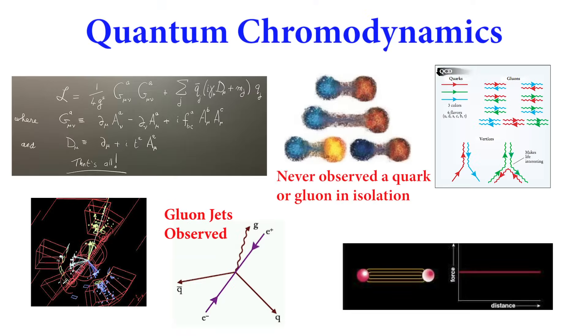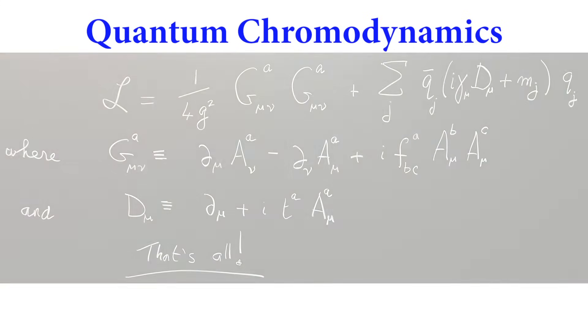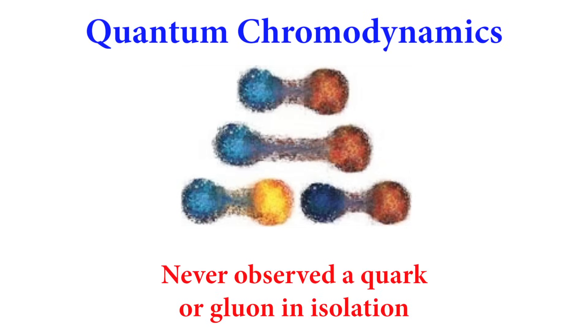In the proton, the quarks are held together by a force where gluons are exchanged and with such a strength that the quarks and gluons cannot be isolated. The quarks and gluons carry a new quantum property known as color. The theory used to describe this force is known as quantum chromodynamics or QCD, the quantum theory of color.